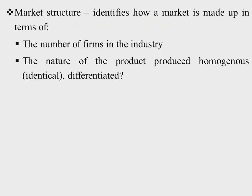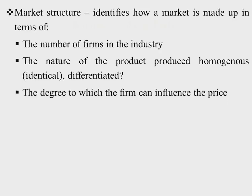We also identify the market in terms of the nature of the products produced — whether they are homogeneous or differentiated. Then we look at the degree to which the firm can influence the price. Depending on its power to influence the price, a given firm can be categorized in terms of the industry where it belongs. We also have the nature of the profit levels that are obtained — so in a monopoly we will see a different kind of arrangement.